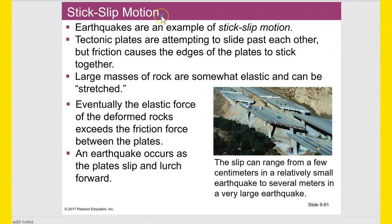Stick-slip motion: earthquakes are an example. Tectonic plates attempt to slide past each other, but friction causes the edges to stick together. Large masses of rock are somewhat elastic and can be stretched or compressed. Eventually, the elastic force of the deformed rocks exceeds the friction force between the plates — that's when the slip occurs and an earthquake happens as the plates lurch forward. The slip can range from a few centimeters in a small earthquake to several meters in a very large one.